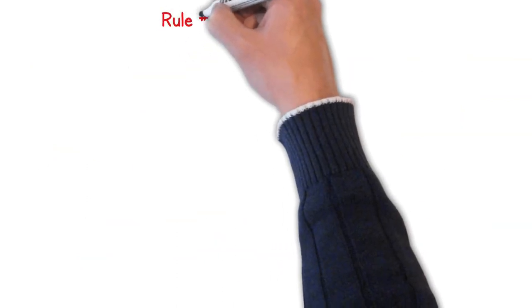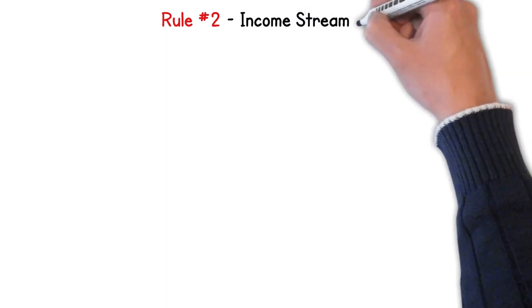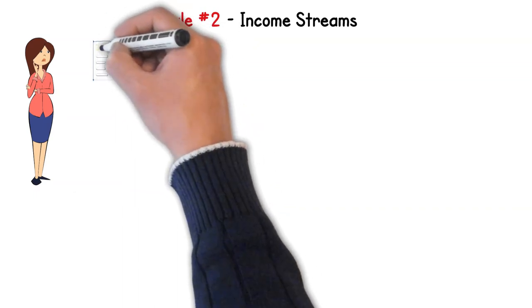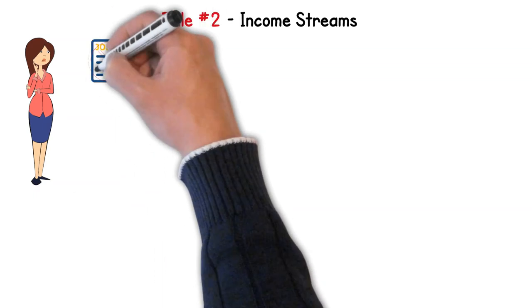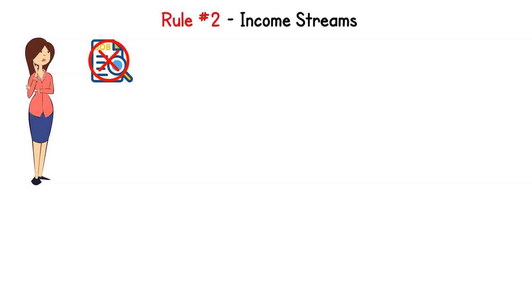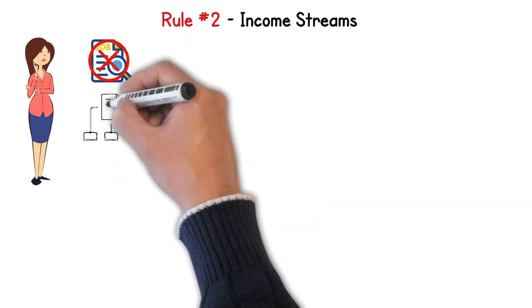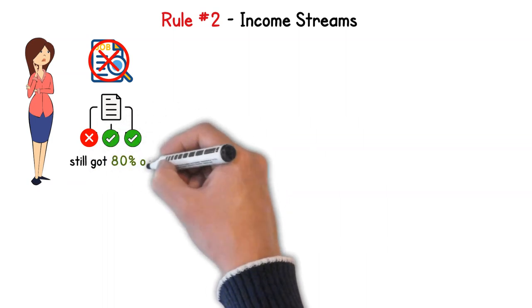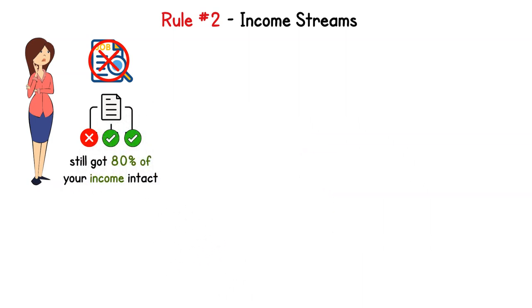Let's dive into rule number two. We're talking about income streams. Let's say you have one job, and that's your only income. If for some reason, touch wood, that job goes away, your income goes to zero. But if you have five different income streams and one dries up, you've still got 80% of your income intact. Makes sense, right?